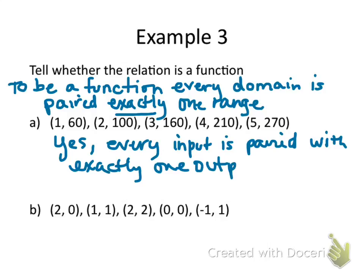Okay, so every input is paired with exactly one output. Looking at part B, (2,0), (1,1), (2,2), (0,0), and (-1,1), the 2s are the part that make it a problem. The 1 going to an output of 1 and the -1 going to an output of 1 is not a problem. It is where you have the 2 going to 0 and then going to 2. So since you have a 2 paired with two different outputs, it is not a function.